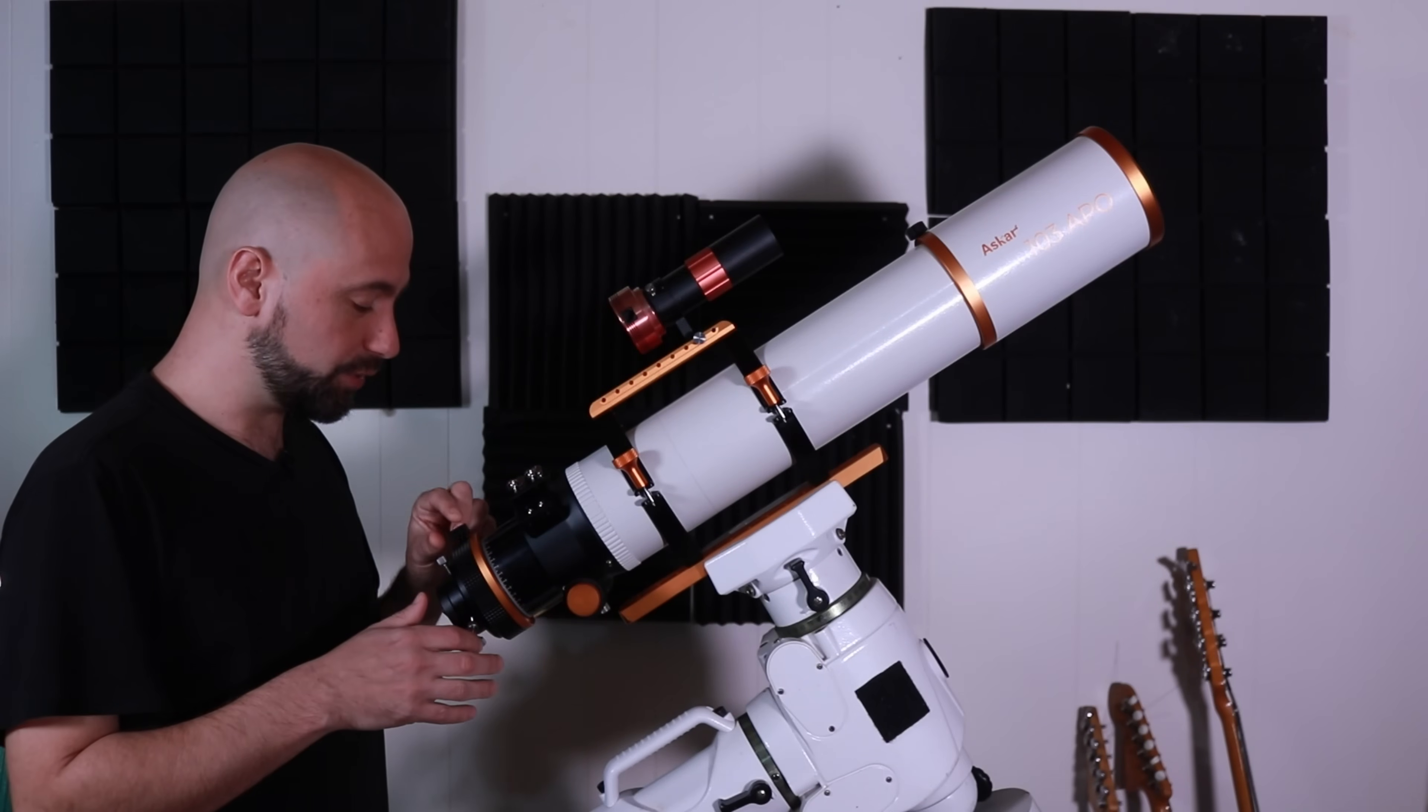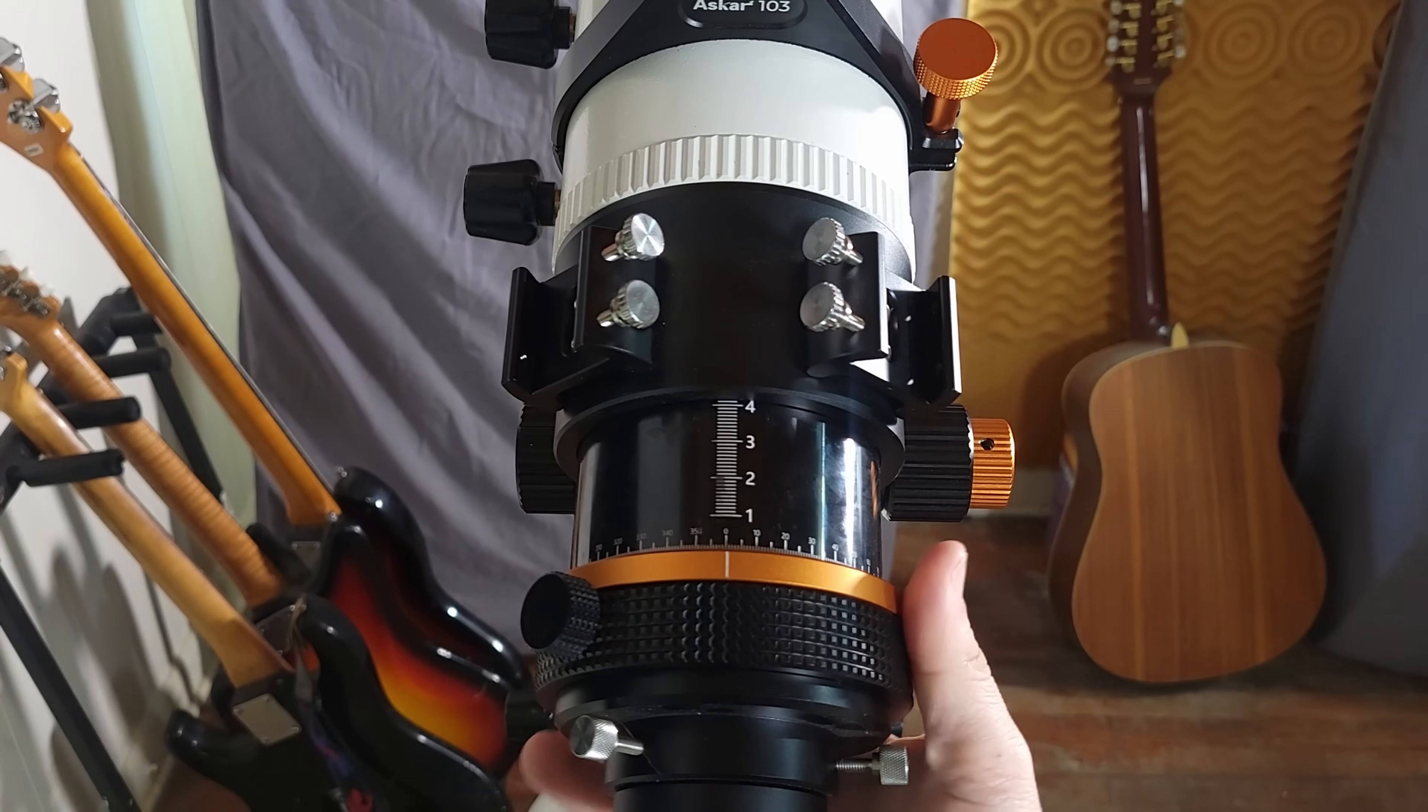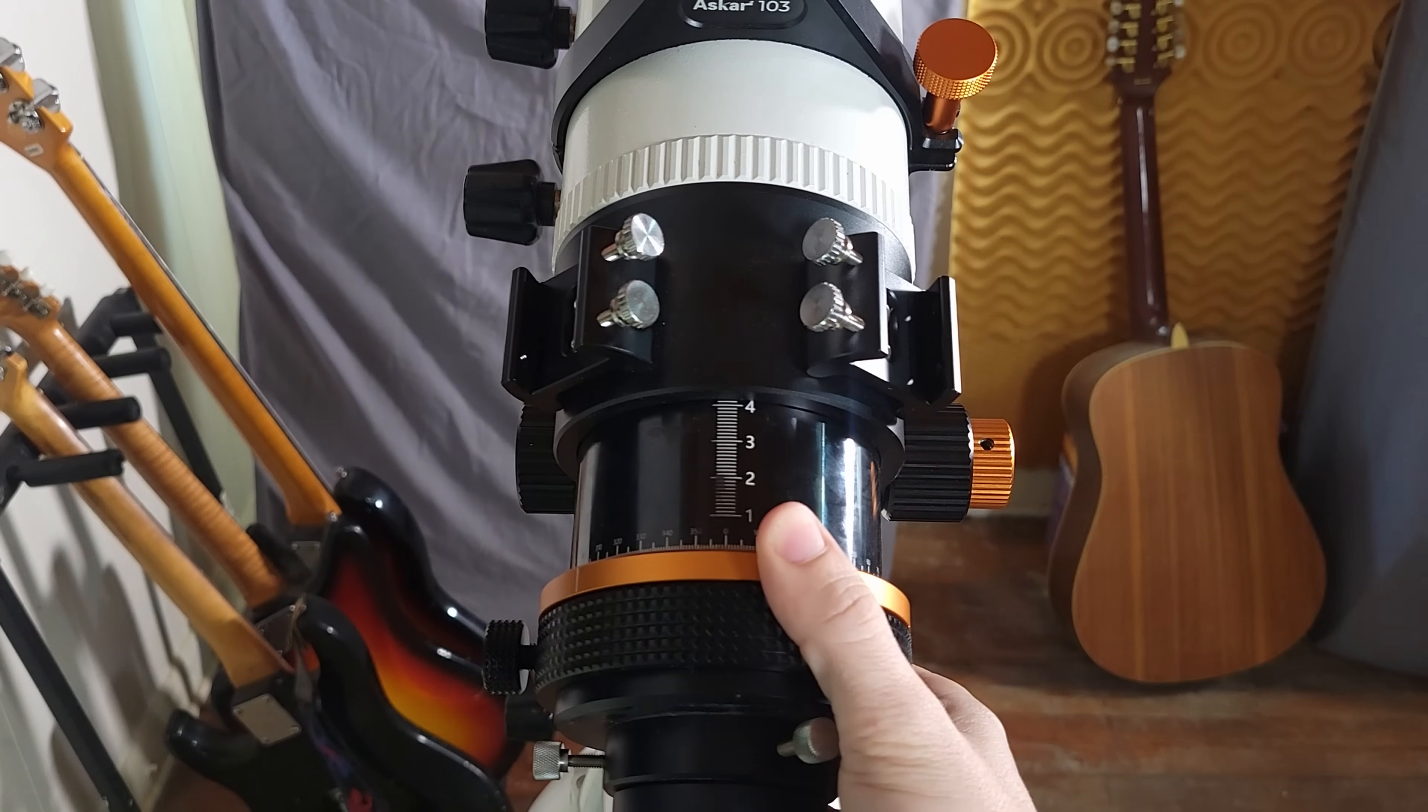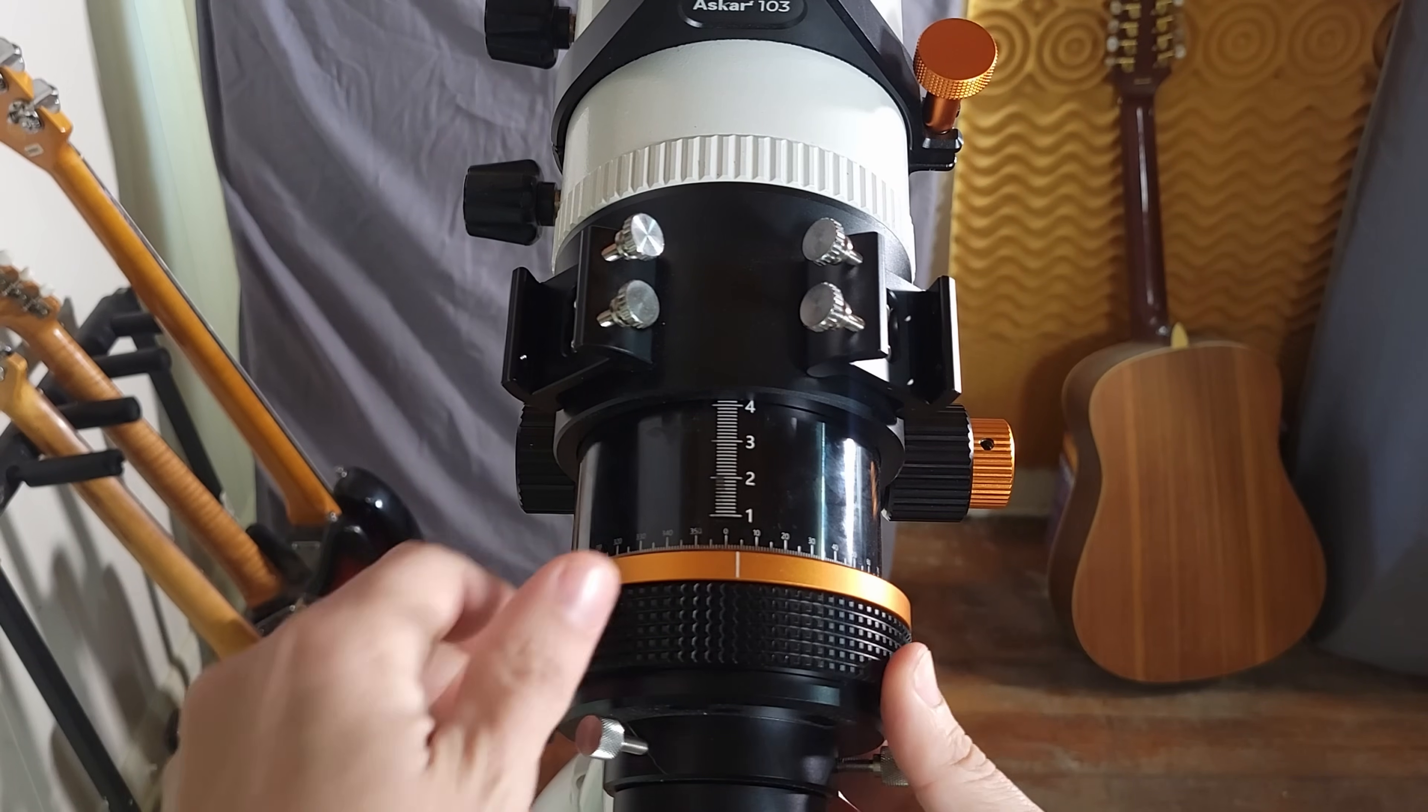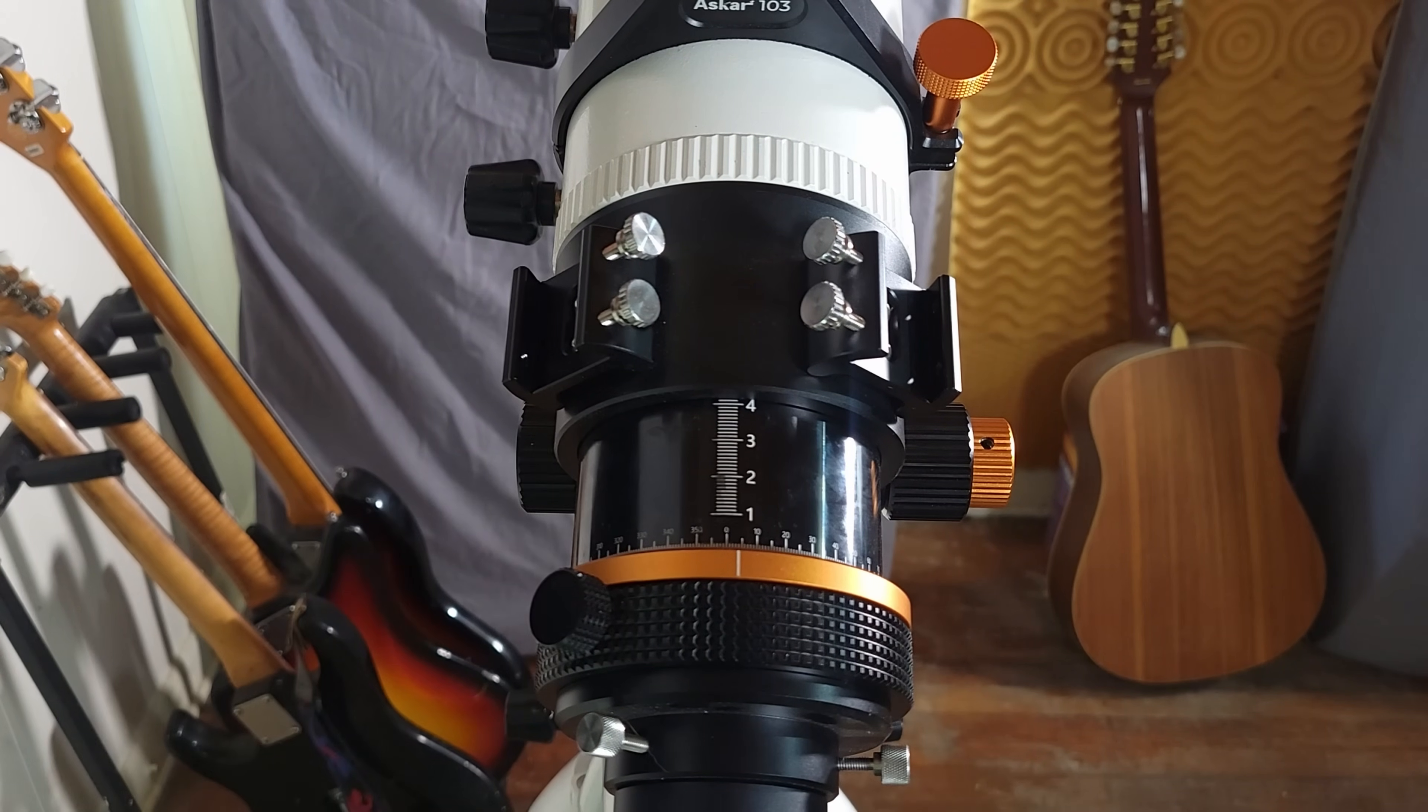It has a 360-degree rotator with scales, so you can actually get precise rotation of your camera. And when you're done, it also has a locking knob, so you can screw that down, lock your rotation down, then it won't move.